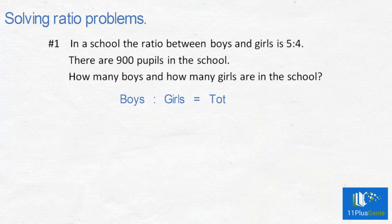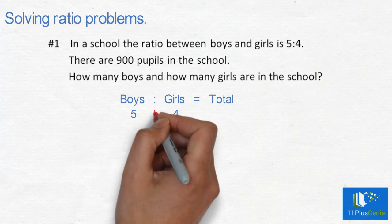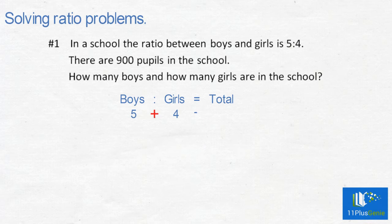Write down the given information. We have boys to girls and we will have a total. The ratios are 5 to 4 and we add these to get the total, which is 9.